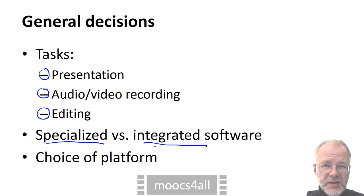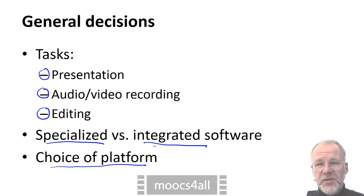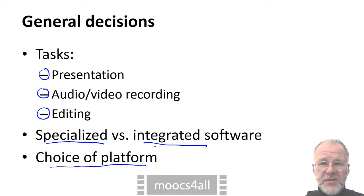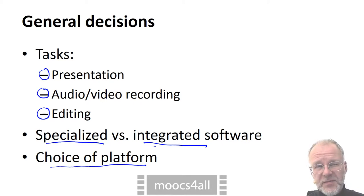As you pick a software tool to use, you will most often also have decided whether it's an app for a tablet or an application for a desktop computer. Most apps are available for both iOS and Android. Most desktop software is available for both Windows and macOS.